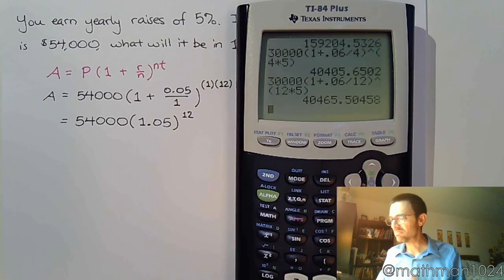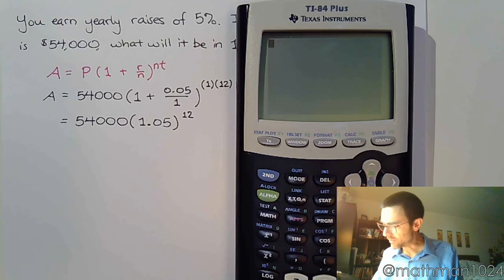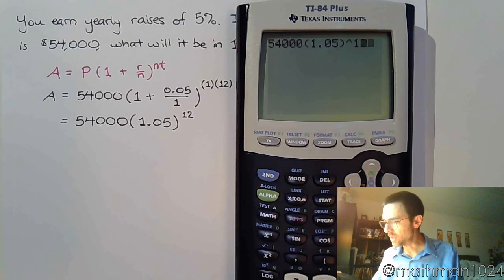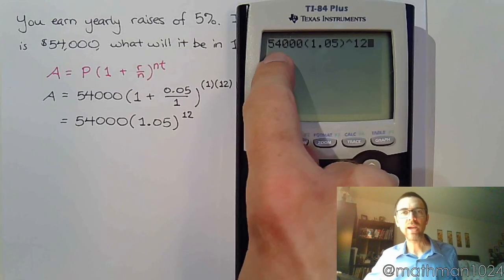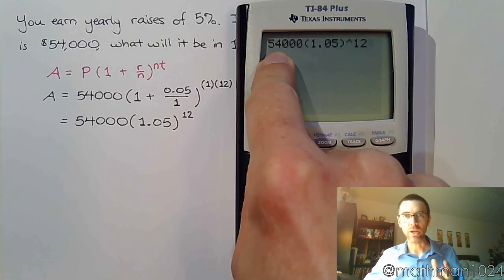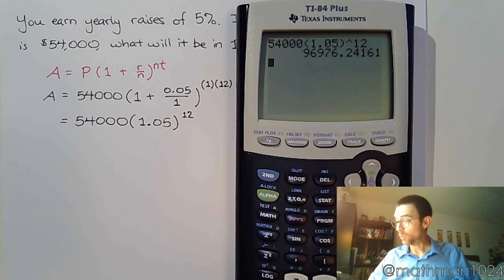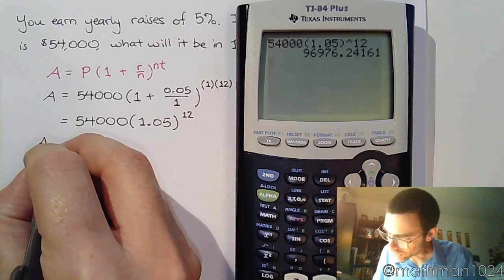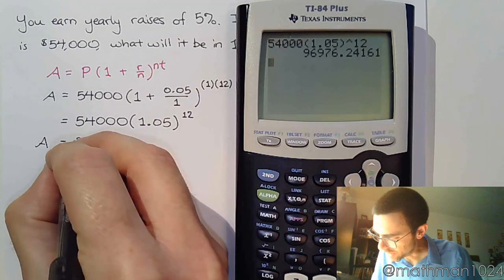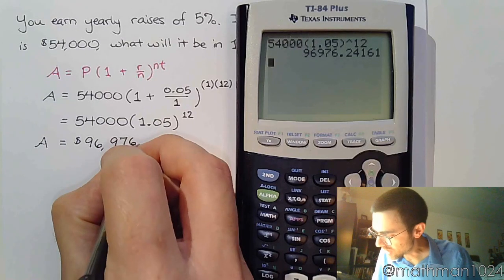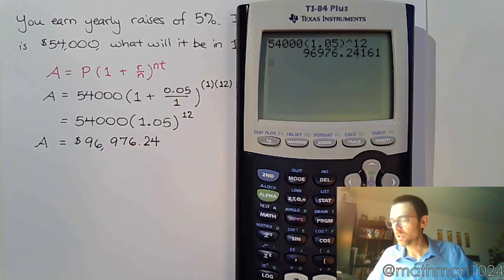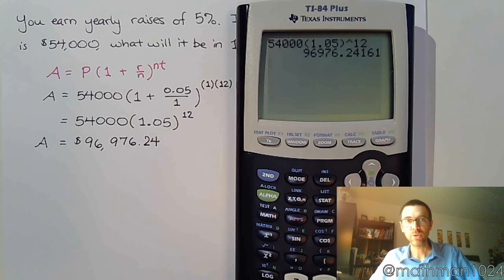Let's go to the calculator and see if this makes sense. We have 54,000 times 1.05 raised to the 12th. Please understand that this power of 12 is only on the 1.05; the power does not affect that initial value at all. We hit enter and wow, so that means that your salary in 12 years is going to be $96,976.24.